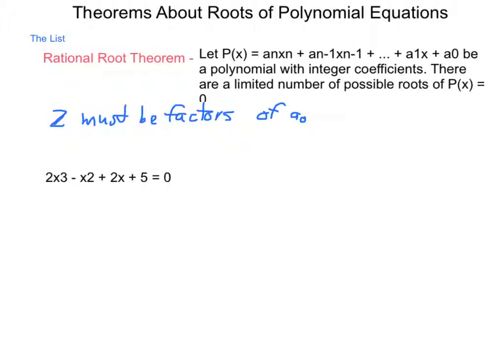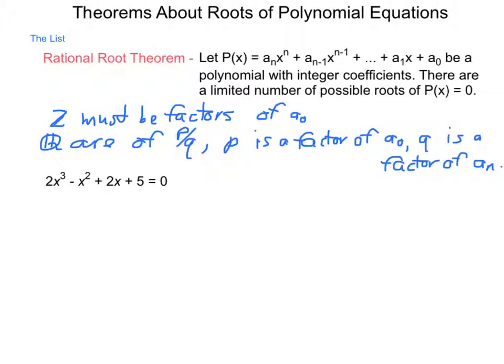And the way we can find this limited number of possibilities is all integer roots must be factors of a_0. And rational roots are of the form p/q, where p are factors of a_0, and q is a factor of a_n. Any other roots that might exist would have to be either irrational or imaginary.